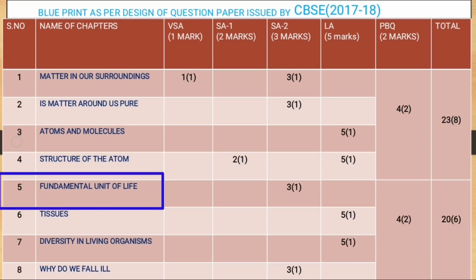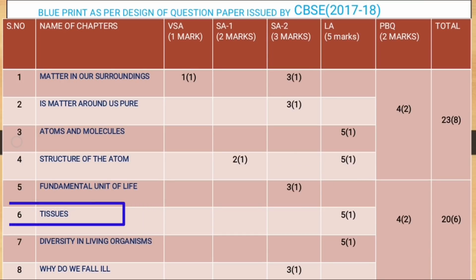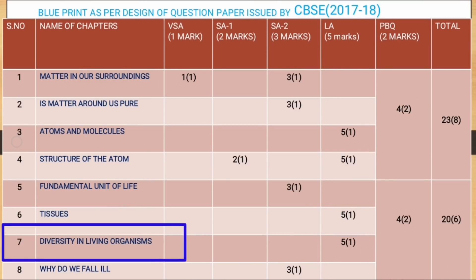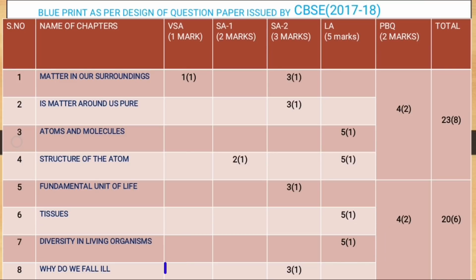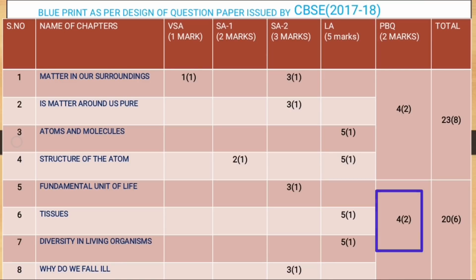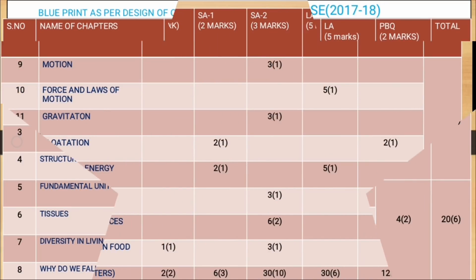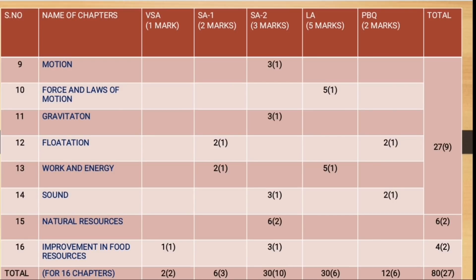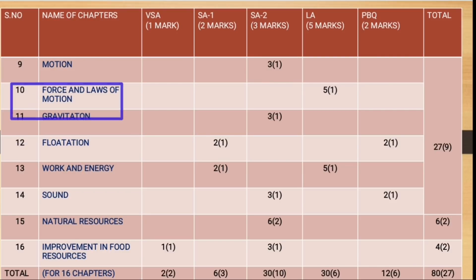Chapter 5, Fundamental Unit of Life, covers one question for three marks. Chapter 6, Tissues, covers one question for five marks. Chapter 7, Diversity in Living Organisms, covers one question for five marks. Chapter 8, Why Do We Fall Ill, carries one question for three marks, and there will be two questions for four marks from the practical book related to these practicals.